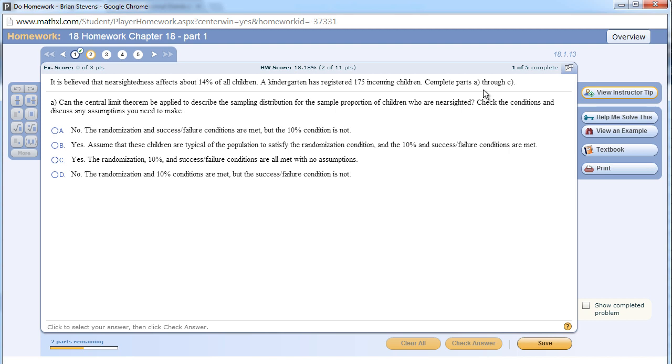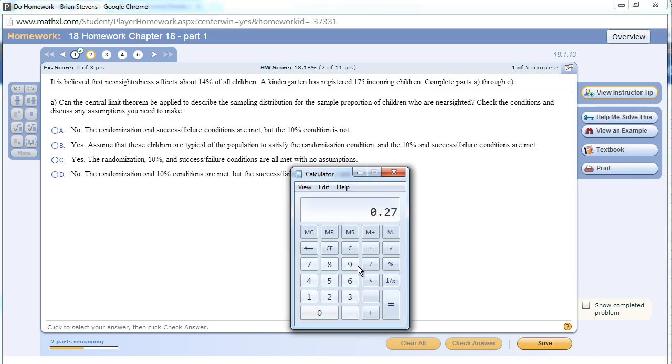Going on to this question, we know that 14% of all children are nearsighted. We go to a kindergarten class where 175 students are in it, and we want to figure out the sampling distribution for the proportion of students who will be nearsighted. Let's check the success failure condition. It would be that pn and qn are each greater than 10. So let's take 0.14 times 175, that's greater than 10, and 0.86 which is q times 175, that is greater than 10. There's at least 10 expected successes and 10 expected failures.